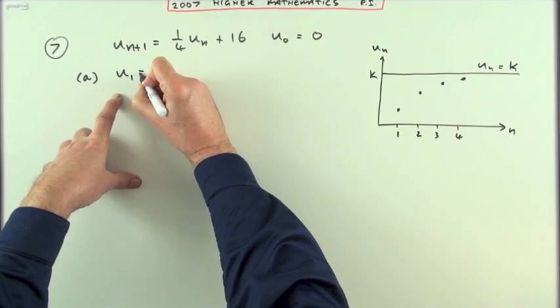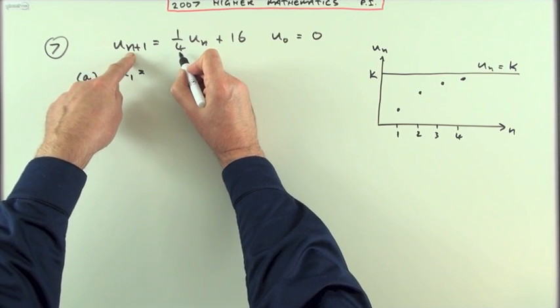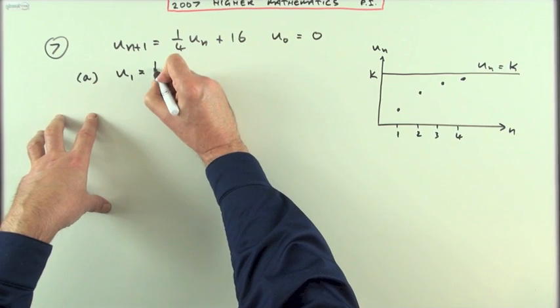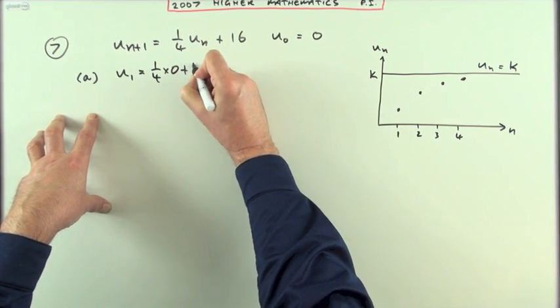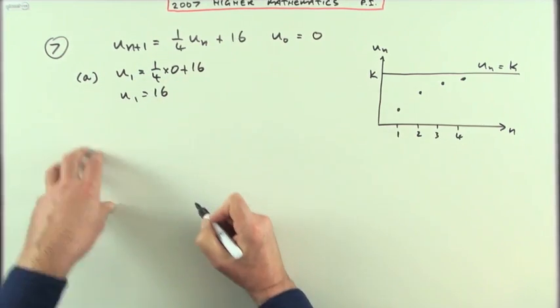So if I want U1, I'll need to know U0, and I do. The pattern is to get a particular term, I do a quarter of the one before it. A quarter of 0 plus 16, which means U1 is going to be nothing and 16 is 16.